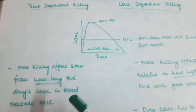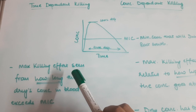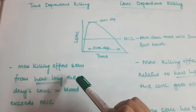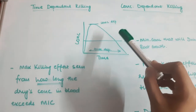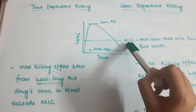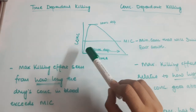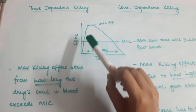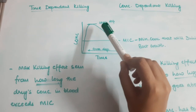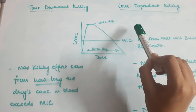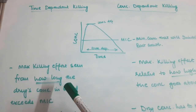In time-dependent killing, the maximum killing effect of the particular drug is seen from how long the drug's concentration in blood exceeds the minimum inhibitory concentration. This means that the blood has to maintain a level more than MIC for a very long period so that it brings about the killing of the bacteria.